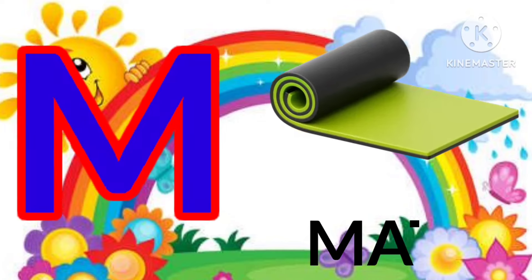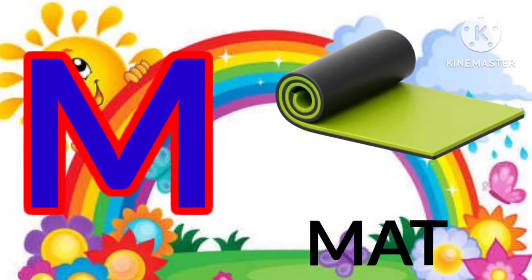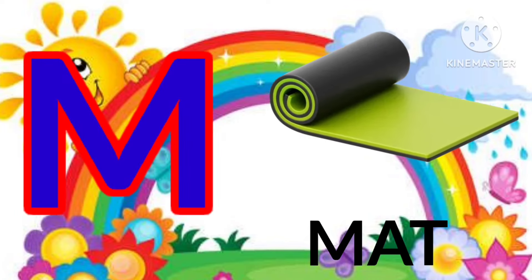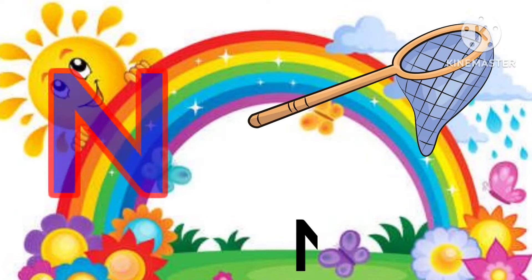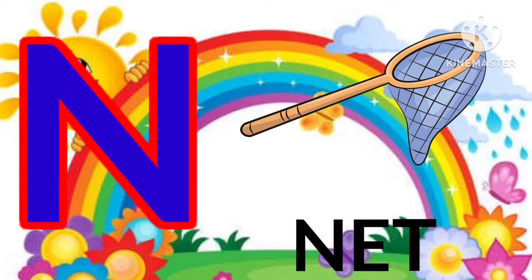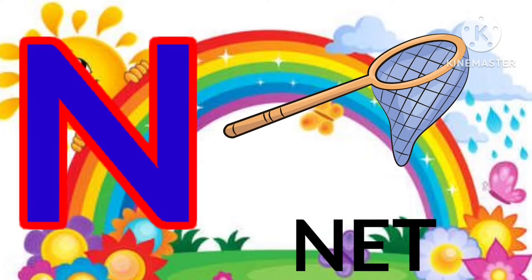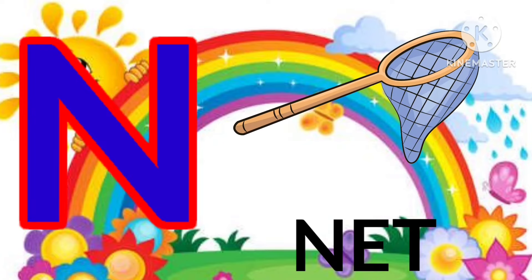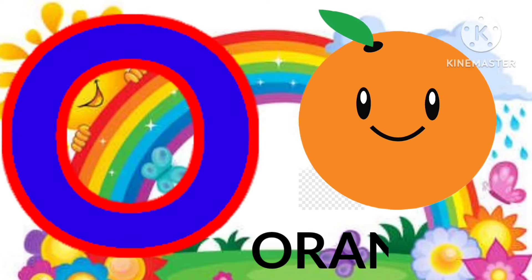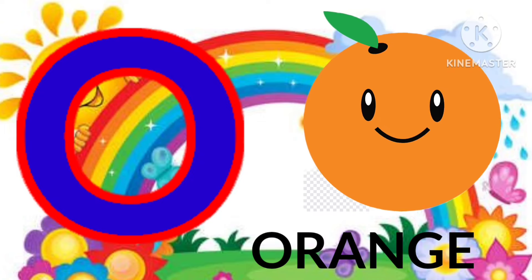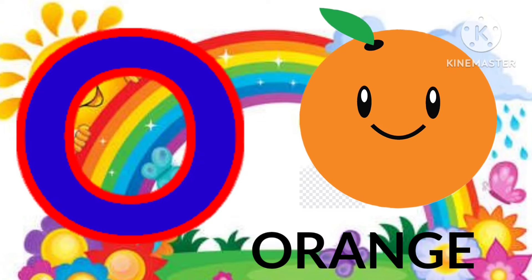M is for mat, m-m-mat. N is for net, n-n-net. O is for orange, o-o-orange.